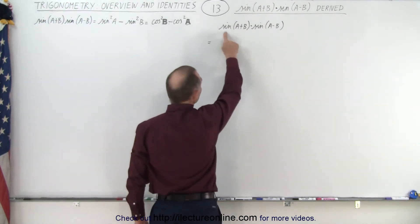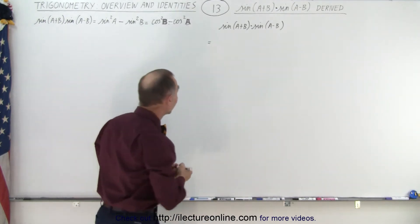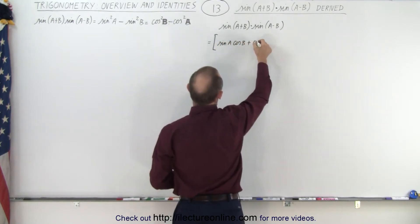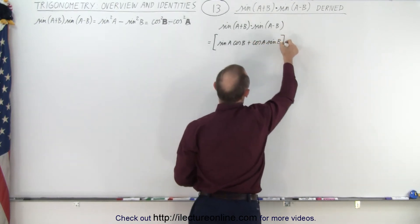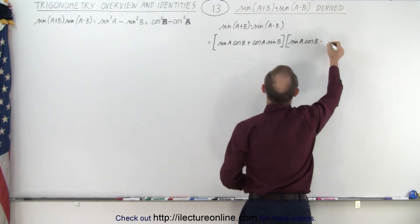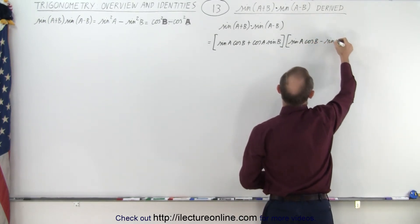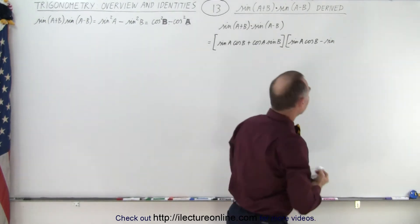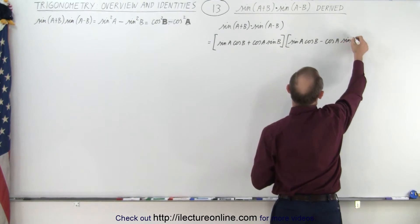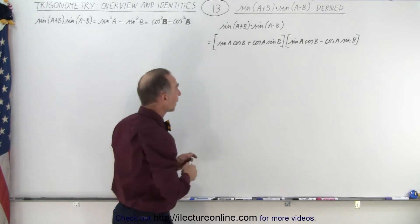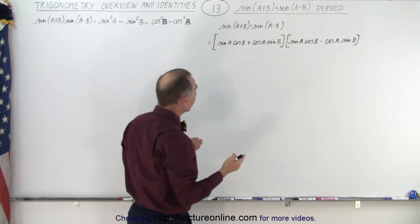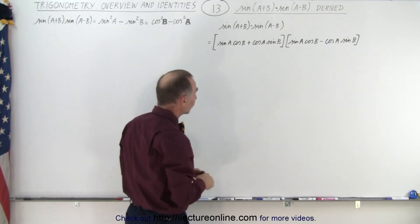First, we'll expand these using what we already know about the sum and difference of angles. So sine(a+b) can be written as sine(a)cosine(b) plus cosine(a)sine(b), multiplied by sine(a-b), which is sine(a)cosine(b) minus cosine(a)sine(b). Essentially we have two binomials with a plus and a minus, so the middle terms will disappear — it equals the product of the first two terms minus the product of the last two terms.